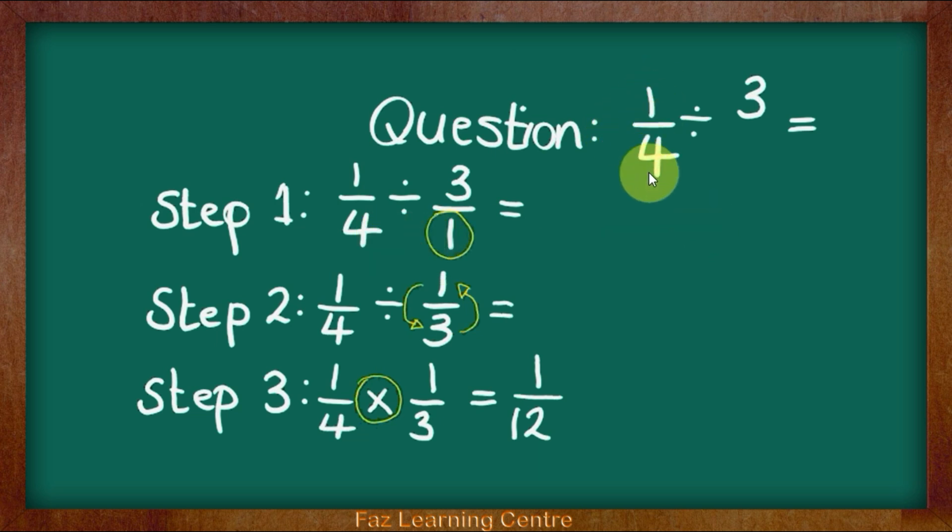First, as you can see in the question, we had a fraction and we had a whole number. Step 1 asked us to change the whole number into a fraction and that is exactly what we have done. We have changed the whole number 3 into 3 divided by 1, which is technically the same as 3 wholes. 3 divided by 1 equals 3, which is the same as 3 wholes.